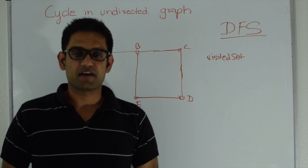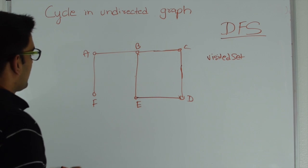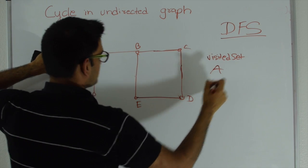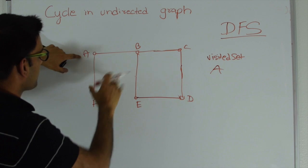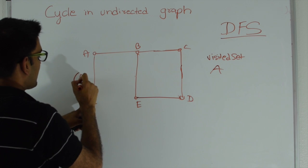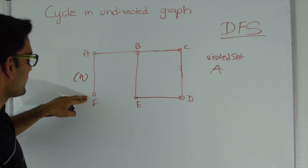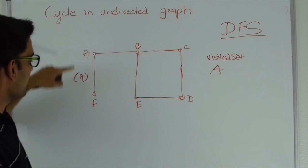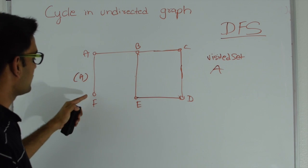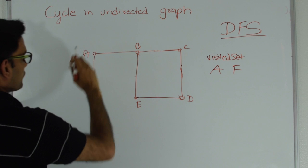In DFS, we keep a visited set to track which vertices we have already visited. We can start from any vertex — let's say we start from A. We put A in the visited set, then explore the neighbors of A. Let's say we explore F first. We go in the direction of F and pass A to F, saying we're coming from A. F explores its neighbor, finds A, but since it came from A there's no reason to continue that way. F has no other neighbors, so we mark F visited and return to A.